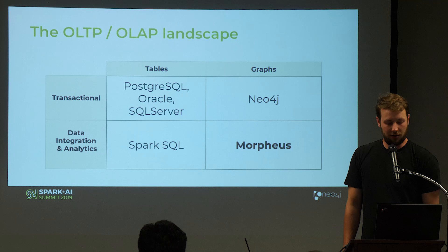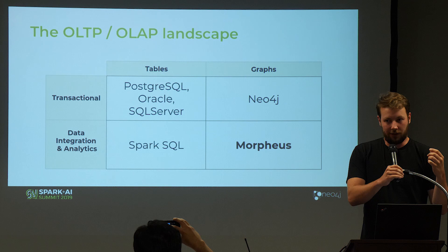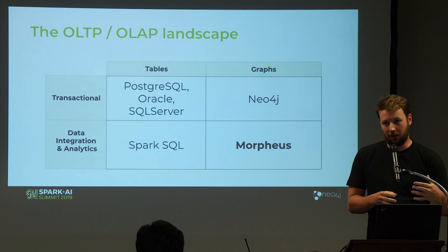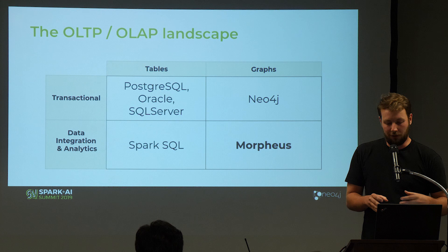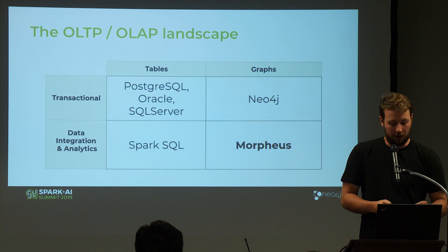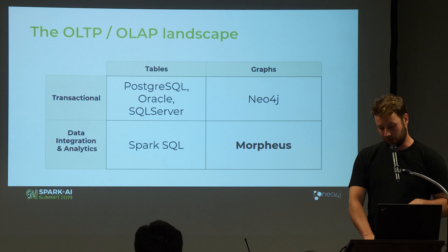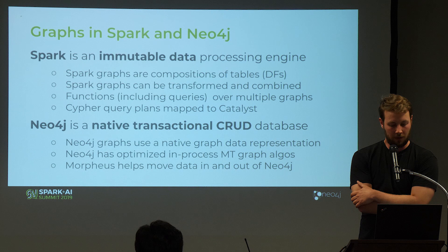On the general landscape, we have transactional systems that operate on tables, like Postgres and SQL. On the other hand, we have analytics platforms like Spark SQL, which also operates on tables in a distributed fashion. At Neo4j, we try to mirror this on the graph space. Our Neo4j database is a transactional graph database, and for the analytics part we try to fill that role with Morpheus.